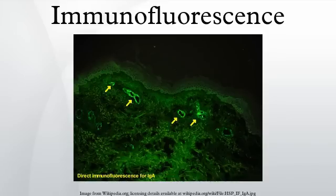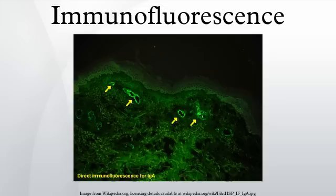Immunofluorescence is a technique used for light microscopy with a fluorescence microscope and is used primarily on microbiological samples. This technique uses the specificity of antibodies to their antigen to target fluorescent dyes to specific biomolecule targets within a cell, and therefore allows visualization of the distribution of the target molecule through the sample. Immunofluorescence is a widely used example of immunostaining and a specific example of immunohistochemistry that makes use of fluorophores to visualize the location of the antibodies.